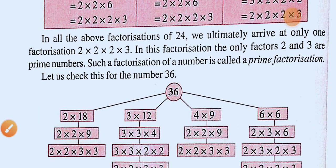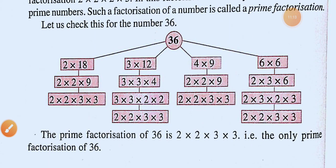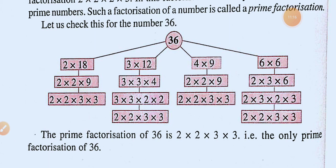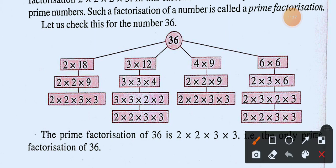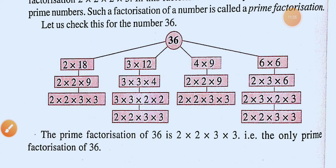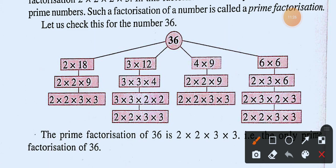Let us find the prime factorization of twenty-four and thirty-six. For thirty-six: 36 ÷ 2 = 18. We continue dividing by two and other primes to find the prime factorization.